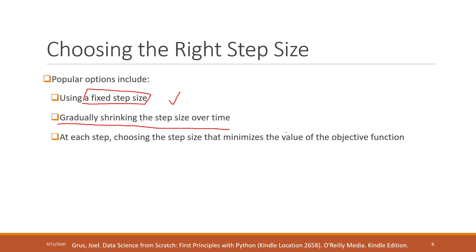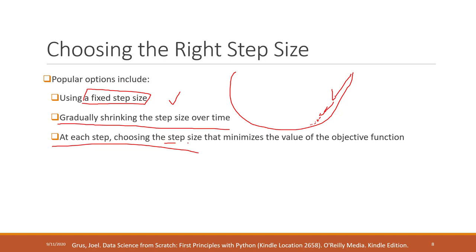A second approach is to gradually shrink the step size over time. Your step size starts very big and becomes smaller and smaller as you go further, which helps you reach the minimum. A third approach is to calculate a different step size at each single step — one that minimizes the objective function at that step. However, this is very complicated and requires a very fast computer.